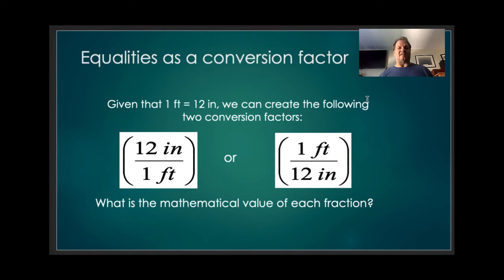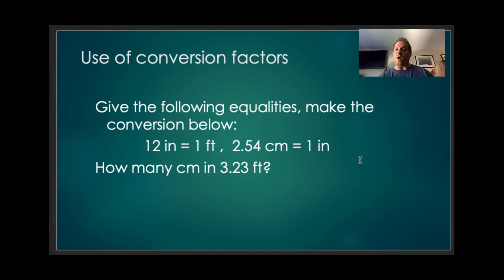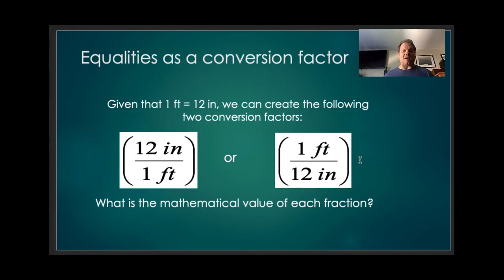When I have equalities, I can turn them into something called conversion factors. We know one foot is 12 inches. So because I know one foot is 12 inches, I can create two different conversion factors. 12 inches over one foot or one foot over 12 inches. What is the mathematical value of each of these fractions? It's one thing divided by the exact same thing. So essentially by multiplying by one of these conversion factors, I'm essentially multiplying something by one. Thus I'm not really changing its value. What's going to happen though is I end up changing the units that we're talking about.